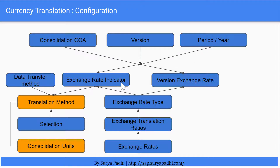The exchange rate indicator is assigned to the translation method along with the data transfer method. The data transfer method controls what type of data — whether it is posting data or periodical data — and where the exchange rate will be applied.